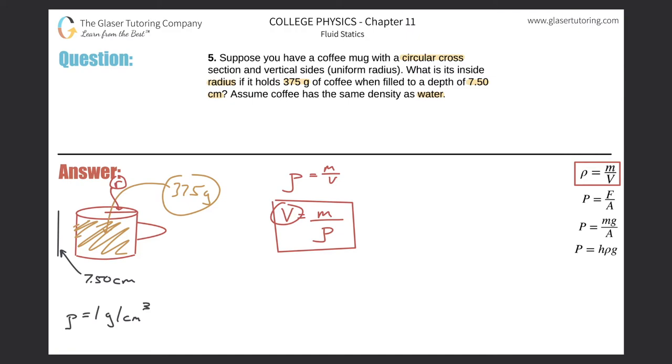Wait a minute, what's the nature of this object? It's a basic cylinder. So we know that the volume of a cylinder is pi R squared H.